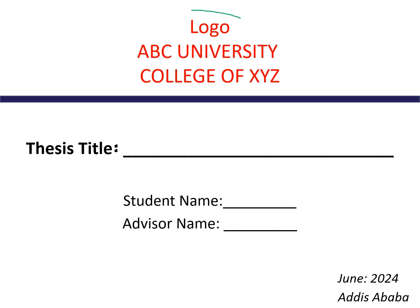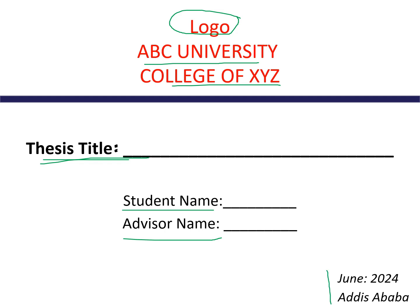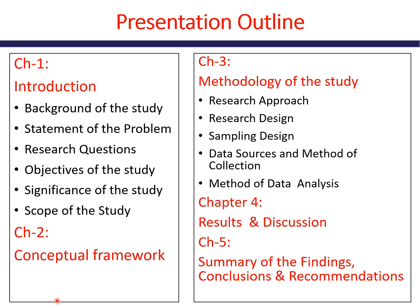The first slide must include the logo of your university and the name of your university. If you have a college or department, state it here. Your thesis title should be written here, and you have to write your name plus your advisor's name. You can also write the date and place of your presentation.